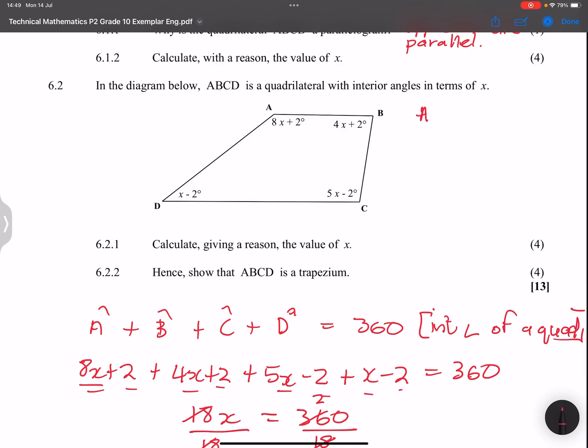So let's say if I take A plus D. So that's 8x, I know x is 20, plus 2, plus x minus 2, which is 20 minus 2. So what does that give us? Sorry, I made a mistake there. That's 8 multiplied by 20, plus 2. So 2 and minus 2 cancel each other out. 8 multiplied by 20, that gives us 160, plus 20, that will be 180.